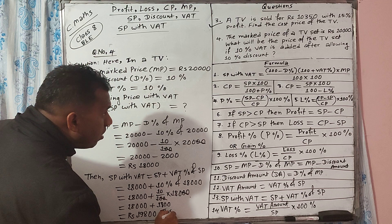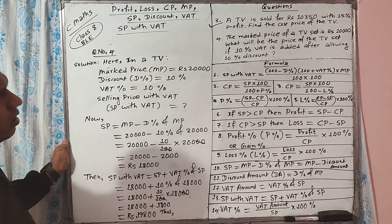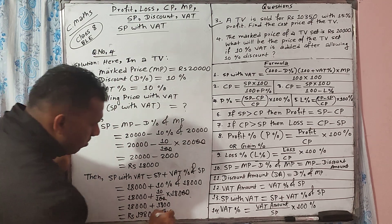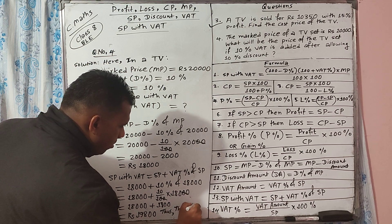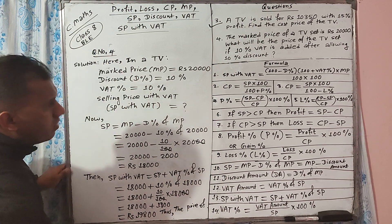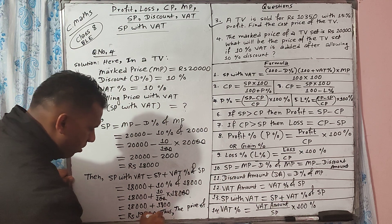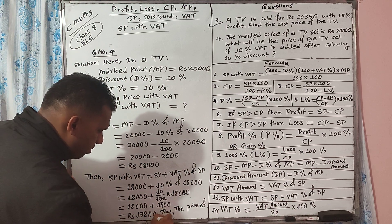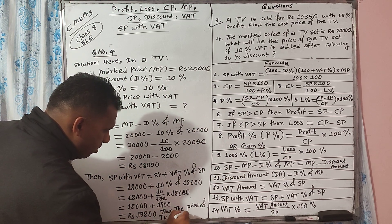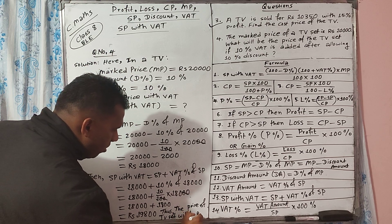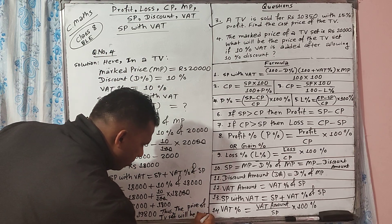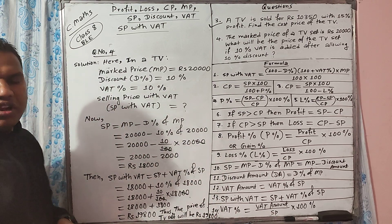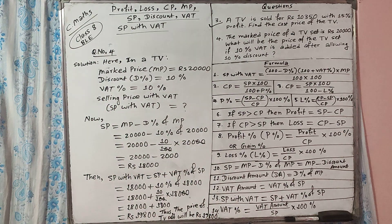Thus, the price of the TV set with VAT is rupees 19,800. Okay students, this was for today. Have a nice time. See you soon.